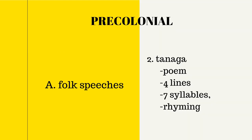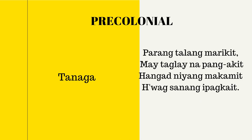Another form of folk speech is the tanaga. It is a poem with four lines, each line having seven syllables. The last syllable in each line rhymes with each other. As you can see from the example, it has four lines, and the words on each line rhyme with each other.